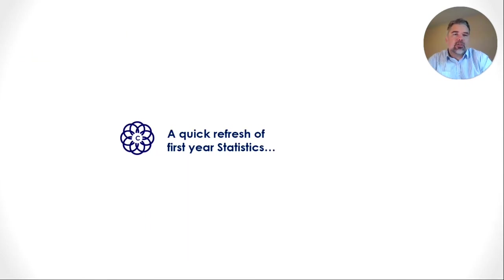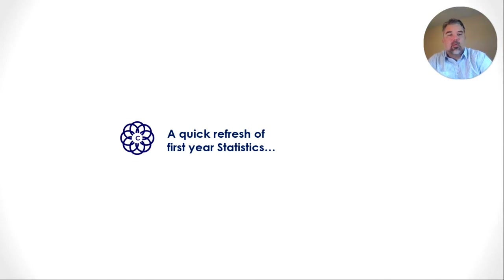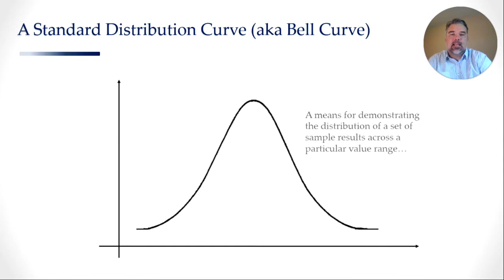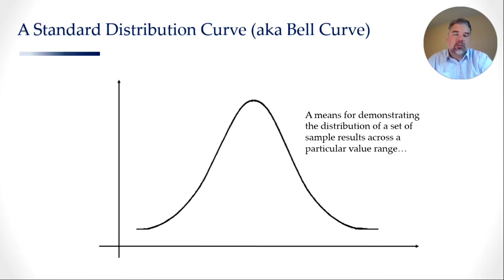In order to get into the detail, I think it's important that we do a quick refresh of first-year statistics, just so that we're all on the same page about what we're talking about when we discuss concepts like regression to the tail and regression to the mean. For those of you who remember your first-year statistics, this is a standard distribution curve, also known as a bell curve. Basically what it does is demonstrate the distribution of a set of sample results across a particular value range.